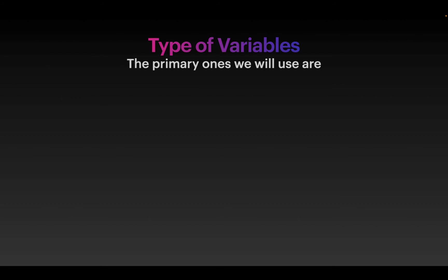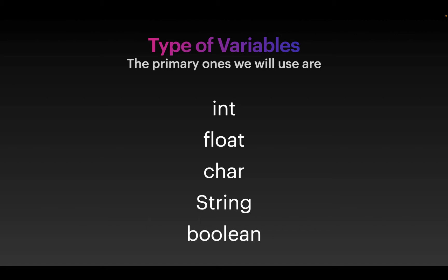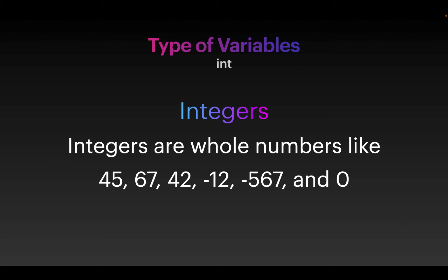There are different kinds of variables that we will use. We will have integers, floats, characters, strings, and booleans. An integer is a whole number — it can be positive, zero, or negative, but it's a whole number. There's no fractional or decimal component on it.